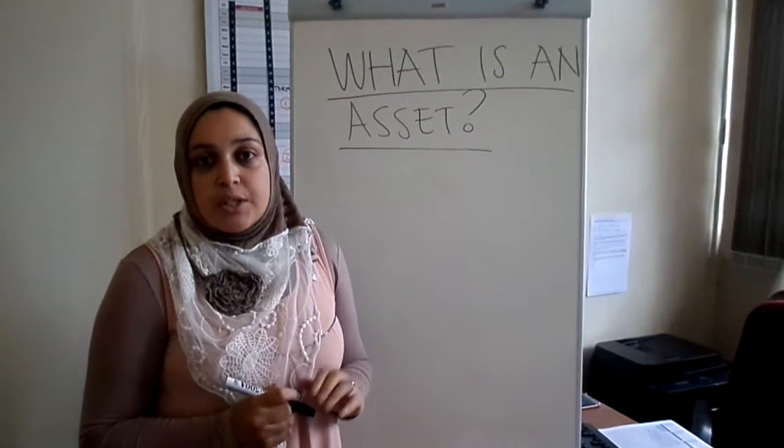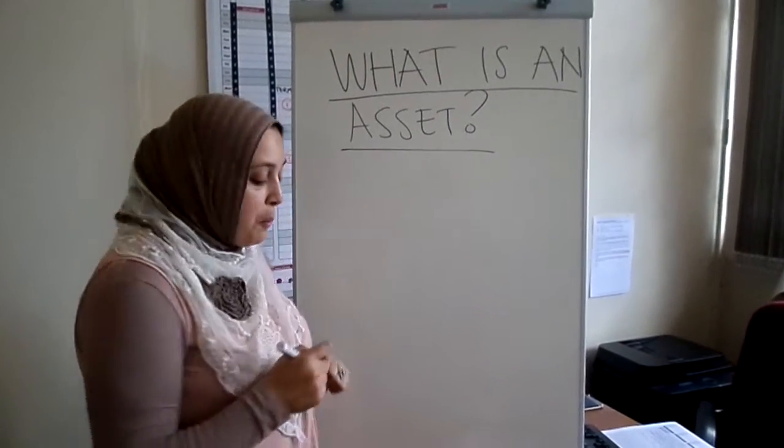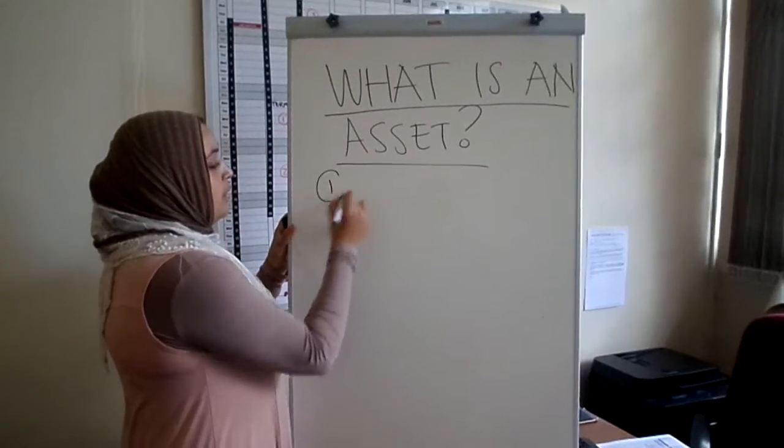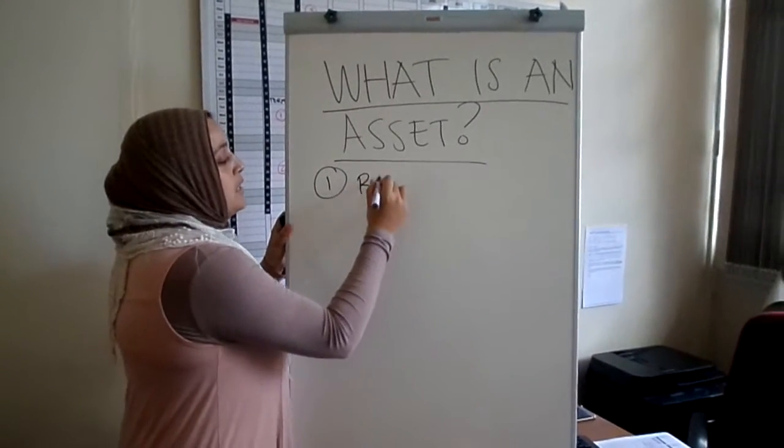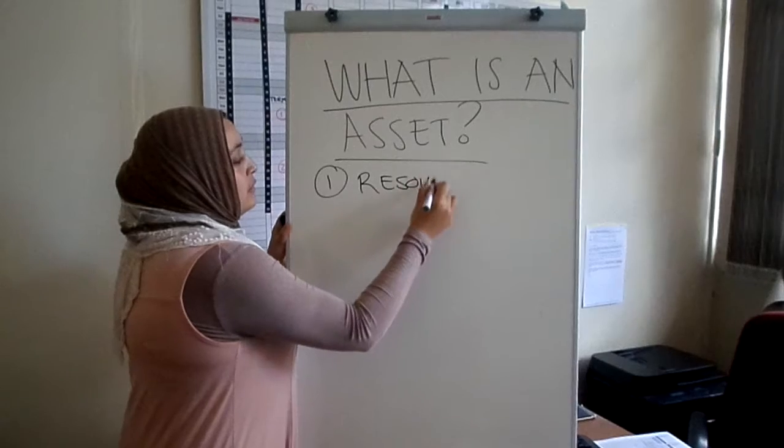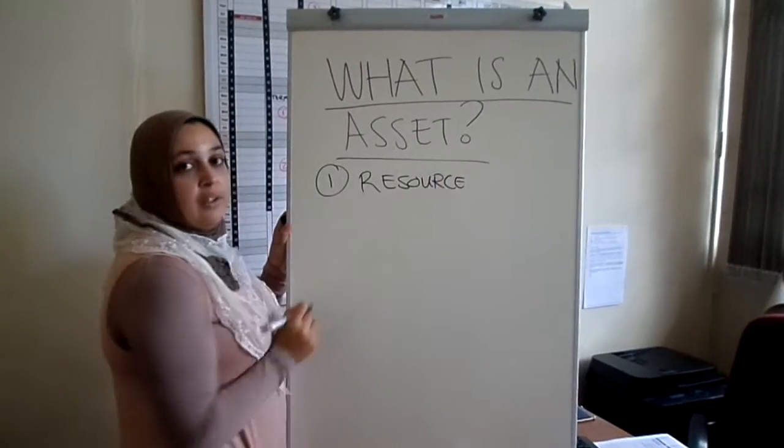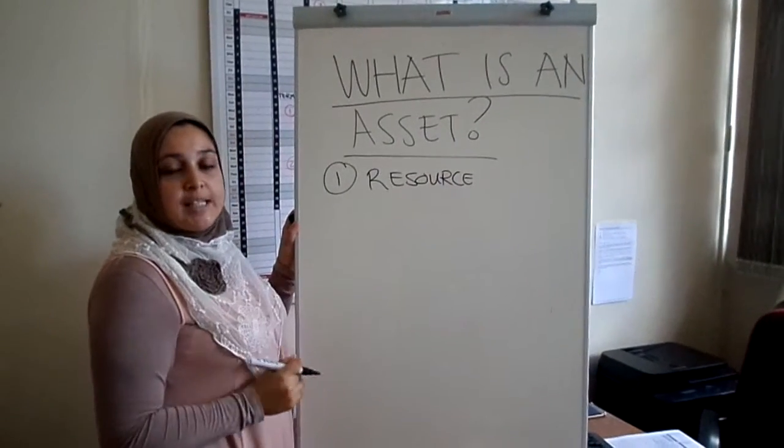Now there are four parts to the definition of an asset. The first one, it needs to be a resource. That's the first part of the definition of asset. Is there a resource?